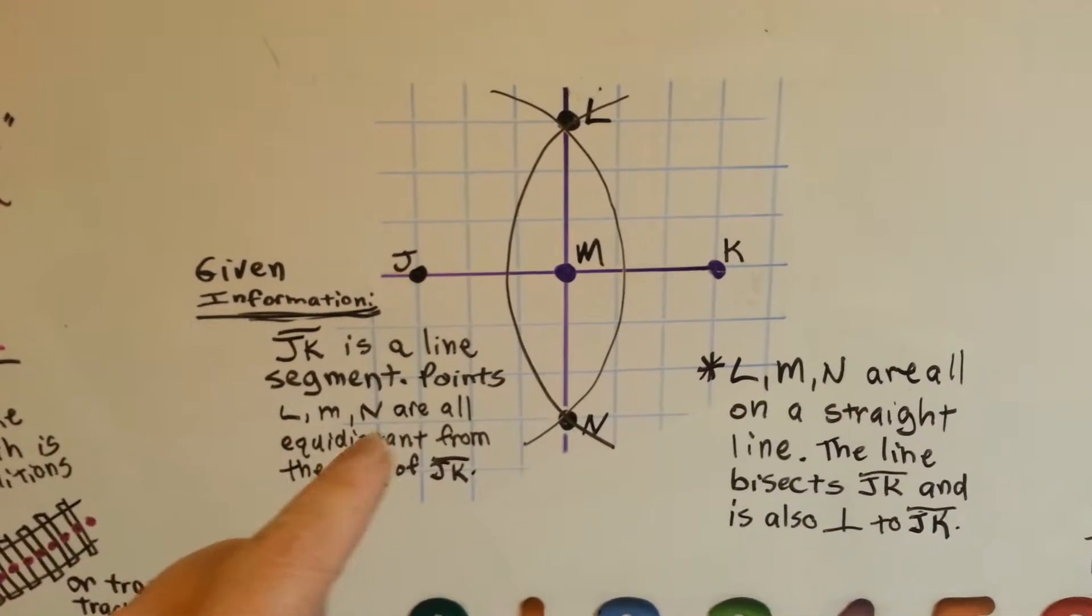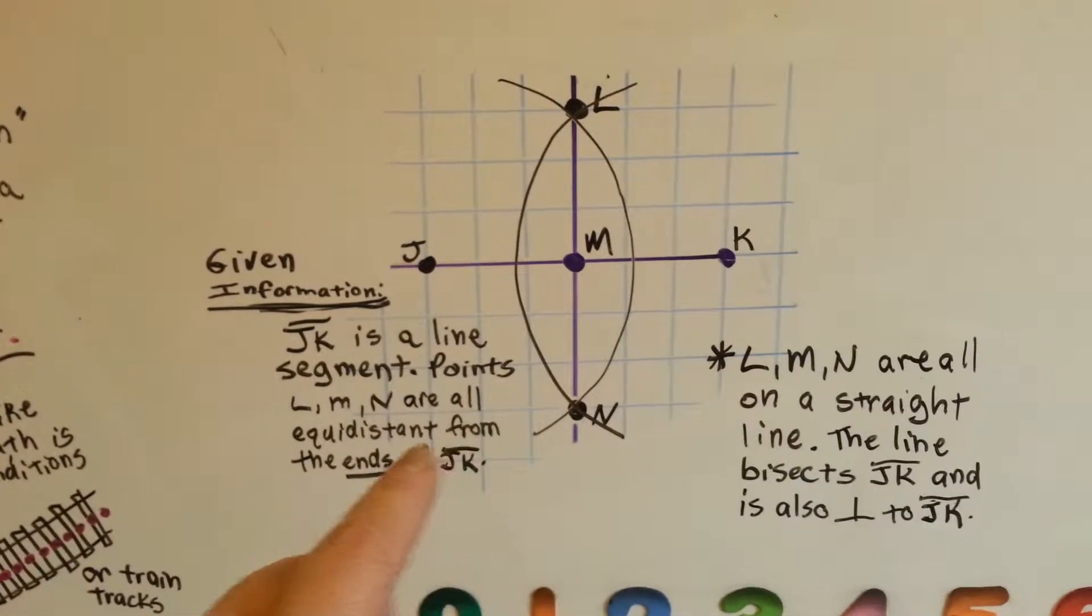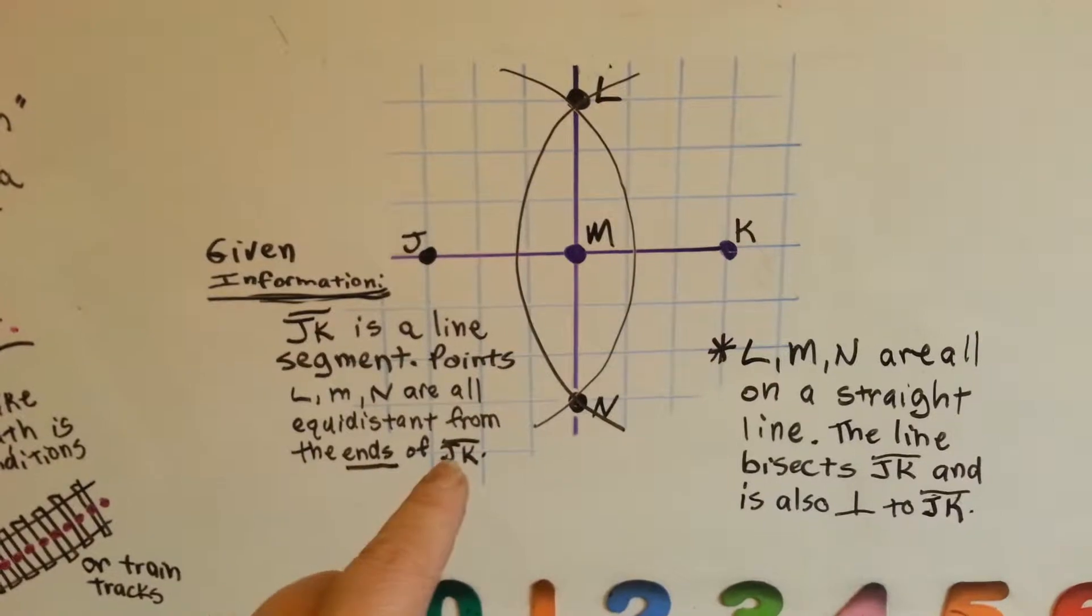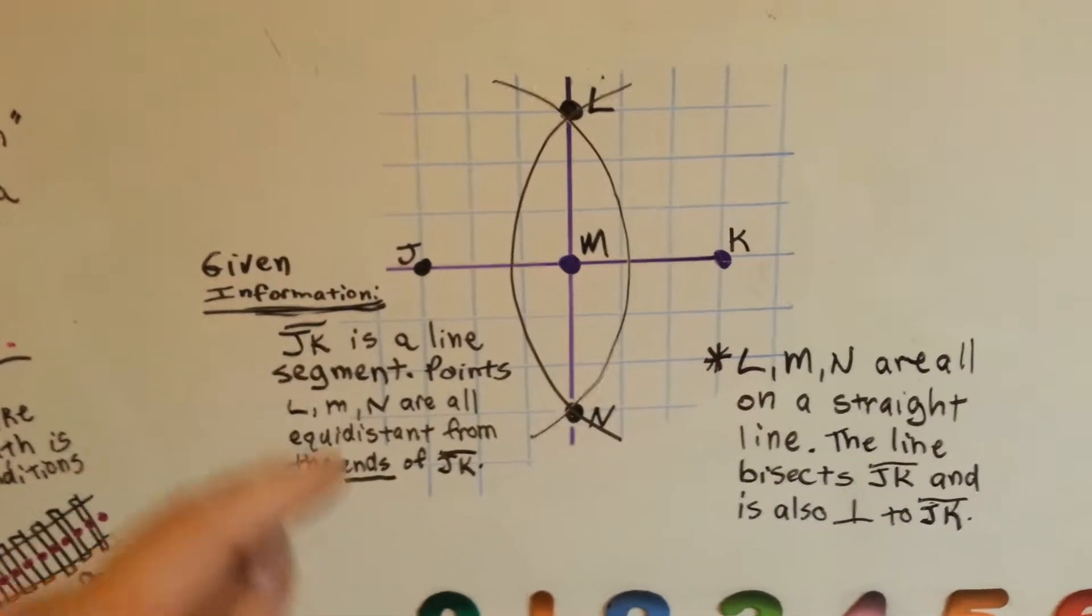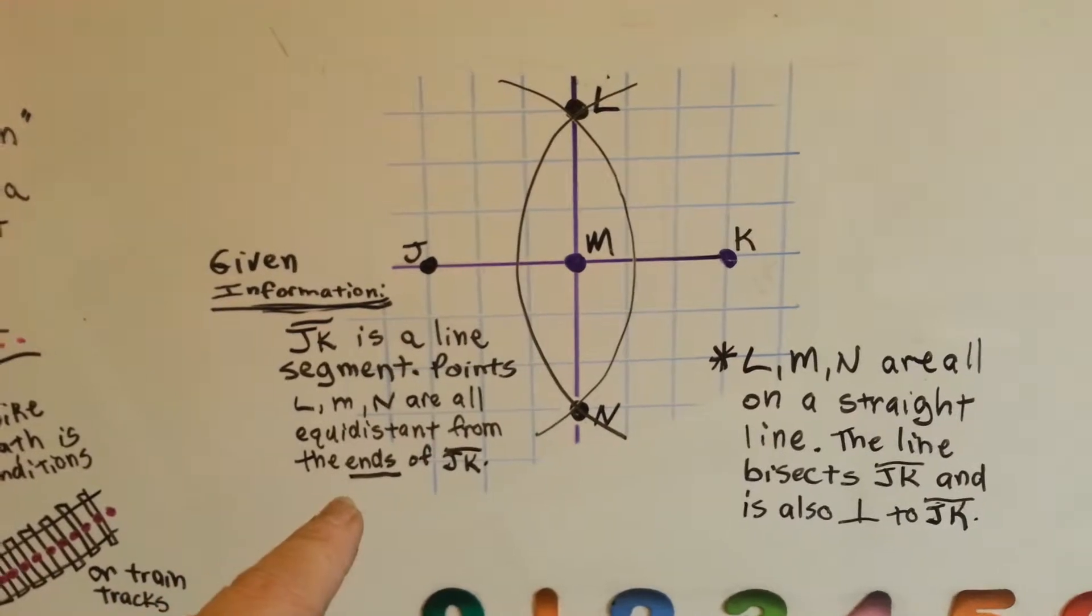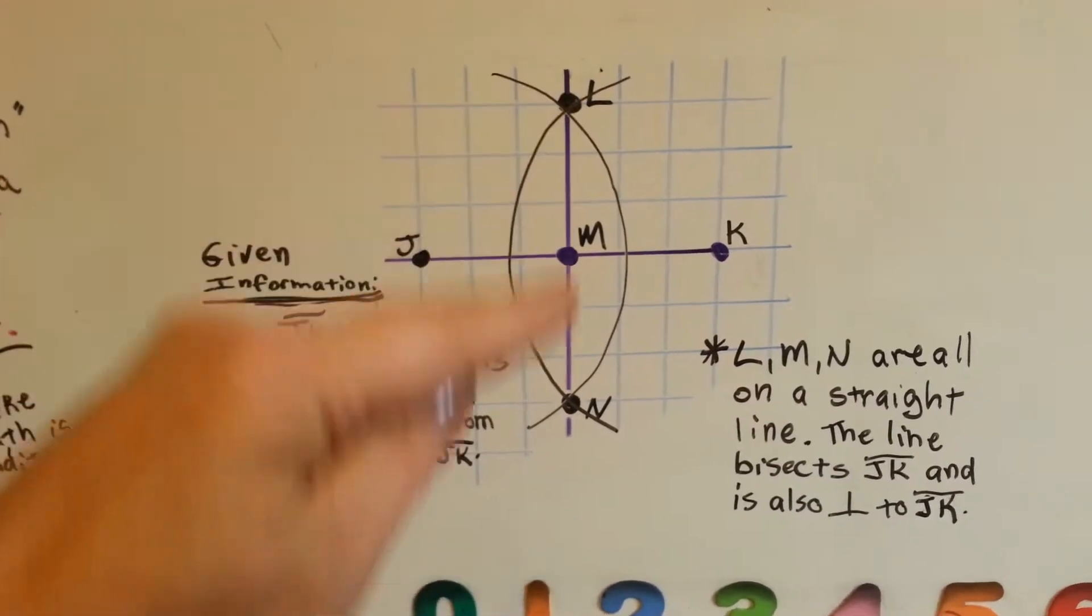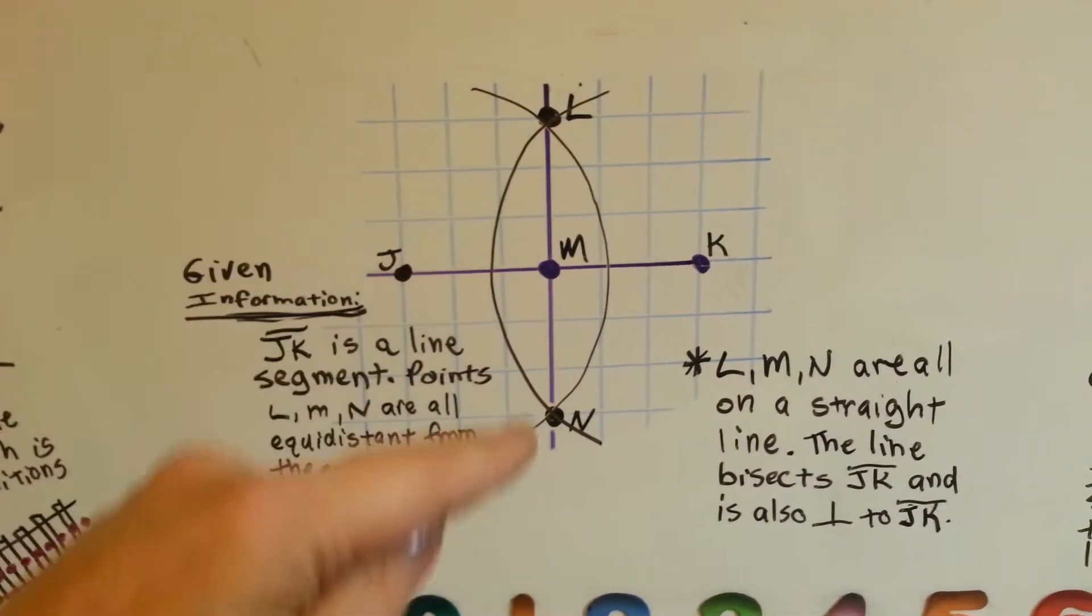Then, the given information said points L, M, and N are all equidistant from the ends of JK, from the ends. So, L, M, and N are all equidistant from the ends of JK. So, I drew a line segment this way.